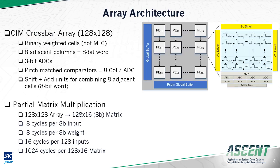In this work, we use a 128 by 128 crossbar array memory, which could be either PC-RAM, R-RAM, or any other non-volatile memory. We assume binary weighted cells and 8-bit weights and 8-bit inputs. For 8-bit weights, we use 8 adjacent cells, meaning our 128 by 128 array can store a 128 by 16 8-bit matrix. We choose 3-bit ADCs because state-of-the-art devices achieve 5% variance, making 8 rows and hence a 3-bit ADC a reasonable choice for 4 or 5 sigma error. We assume 8 adjacent columns share an ADC, so there is only one comparator per column.